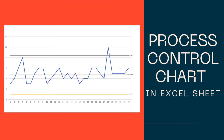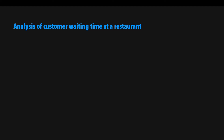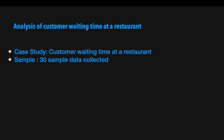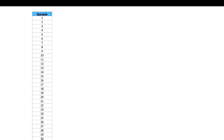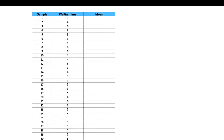In this video we will learn how to create a process control chart using Excel. We have a case study where we will analyze customer waiting time at a restaurant, with 30 sample data collected over an entire week. We will create a sample of 30 data points recorded at the restaurant.